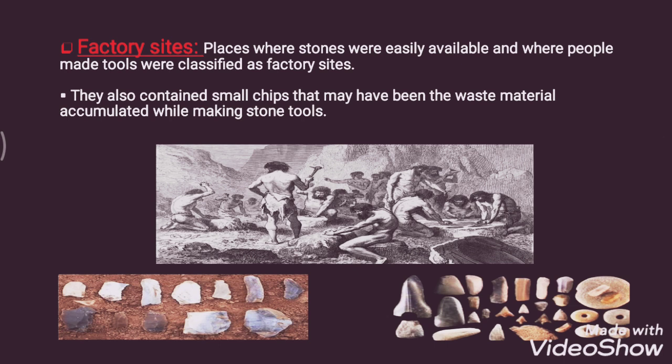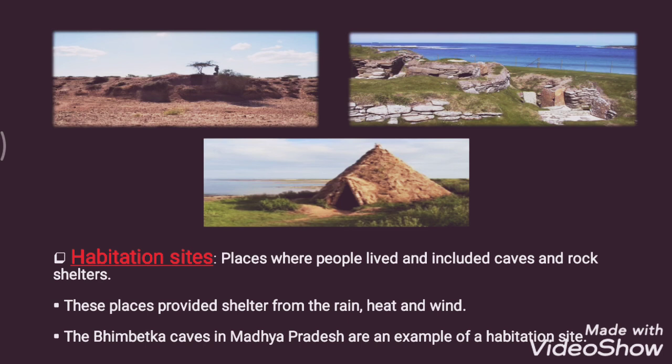The second type of site is the habitation site. Unlike factory sites where people made tools, habitation sites were places where people lived, and included caves and rock shelters. People during the Stone Age chose to live in caves and rock shelters as they provided shelter from rain, heat, and wind. For example, the Bhimbetka caves in Madhya Pradesh are an example of a habitation site.